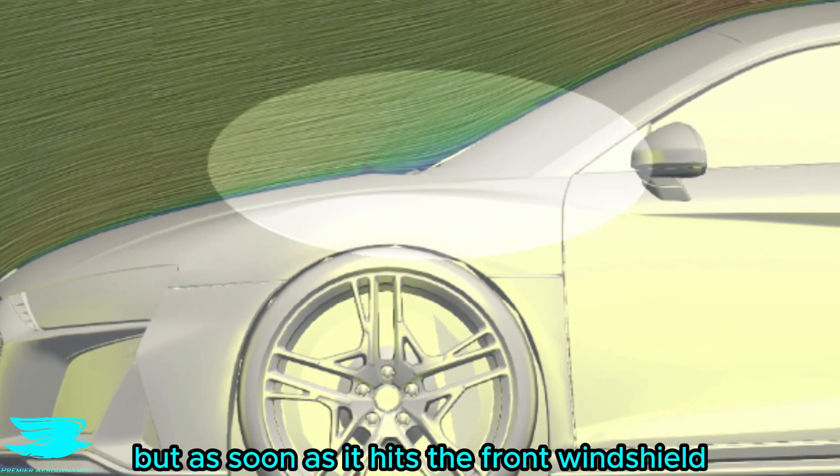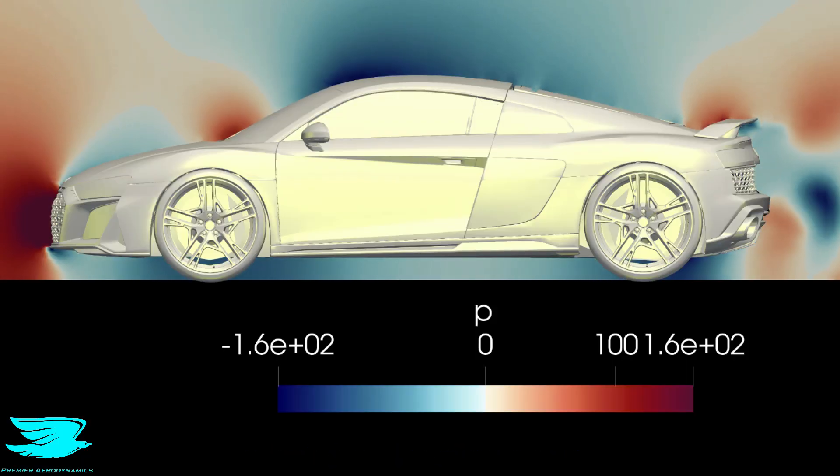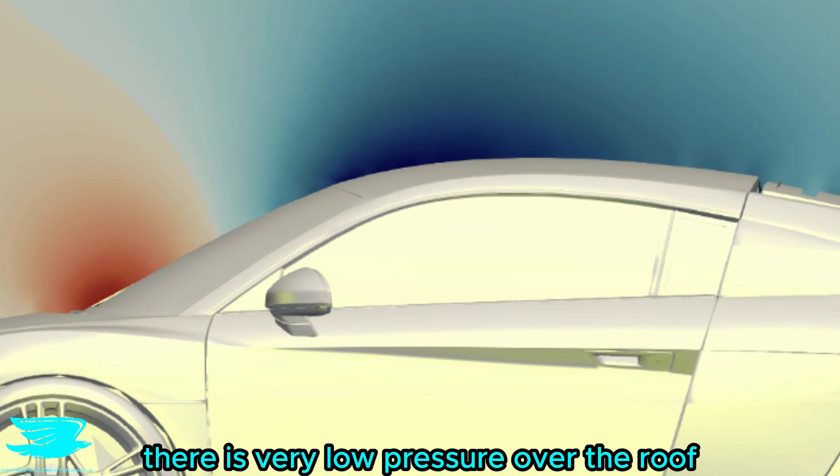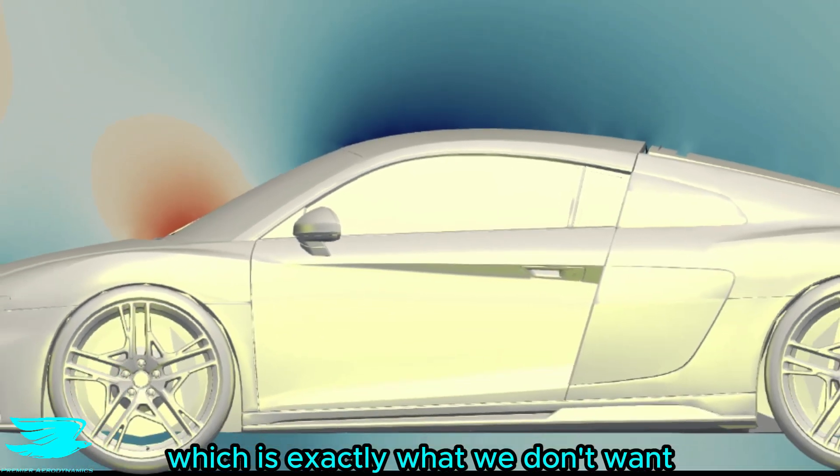But as soon as it hits the front windshield, it has to redirect a lot. And that is because the windshield is angled much more than the hood. This also makes the roof jut out more, which in this video, where we see the pressure, there is very low pressure over the roof. That greatly increases the lift of the car, which is exactly what we don't want.